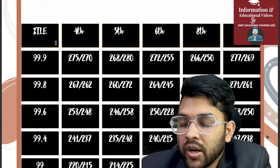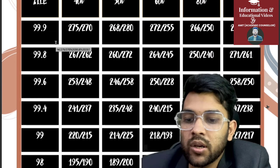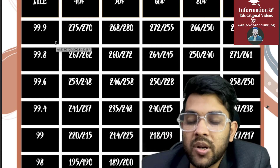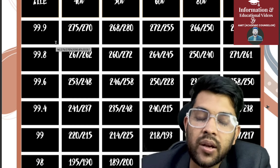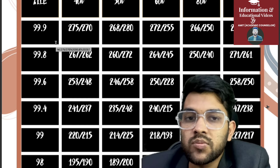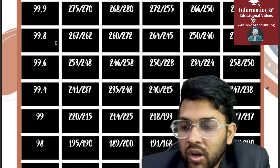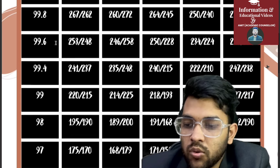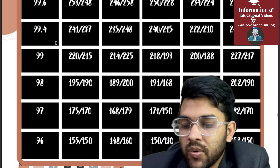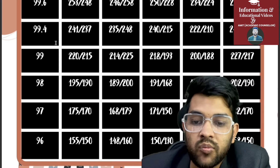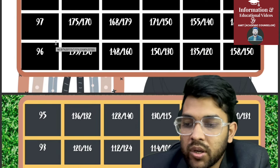For 99.4 percentile: 241 / 235 / 240 / 222 / 247. For 99 percentile: 220 / 214 / 218 / 200 / 227. After the slash you can check the second shift of the same day — that is for April 4th, 5th, 6th, 8th, and 9th respectively. For 98 percentile: 195 / 189 / 191 / 175 / 202. For 97 percentile: 175 / 168 / 171 / 155 / 182. For 96 percentile: 155 / 148 / 150 / 135 / 158.